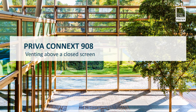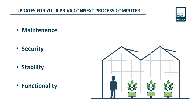PrivaConnect 908: venting above a closed screen. Updating your PrivaConnect process computer is important for maintenance, security and stability of the complete system. Beside that, there are new functionalities in each new version.